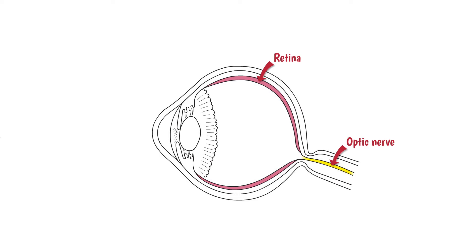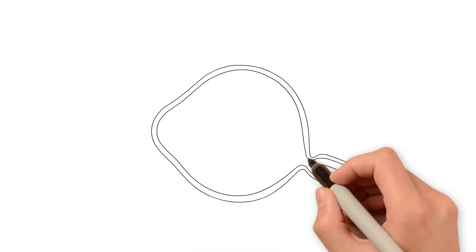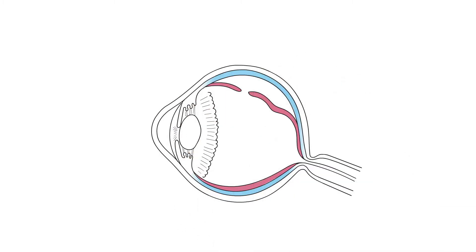The retina lines the inside of the eye and is responsible for sending visual messages through the optic nerve to the brain. When you have a retinal detachment, the retina is lifted away from the back wall of the eye where it is normally connected to a layer of cells known as the retinal pigment epithelium.